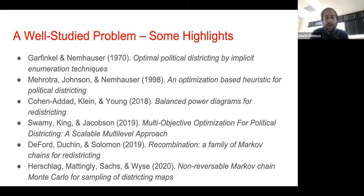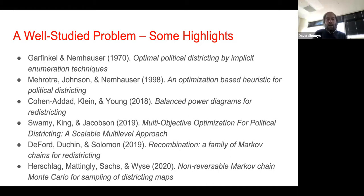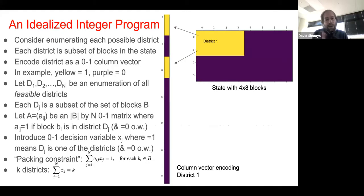While optimization is the focus of the perspectives I'll be covering today, there are a number of alternative mathematical frameworks worth mentioning. There's elegant work by DeFord, Duchen and Solomon based on a Markov chain approach to both sampling and analyzing potential district solutions, and work of Hershbog, Mattingly, Sachs and Wise from a Monte Carlo sampling approach. But those are just highlights of a really rich literature.